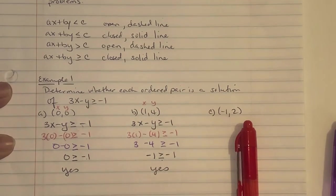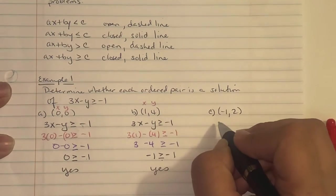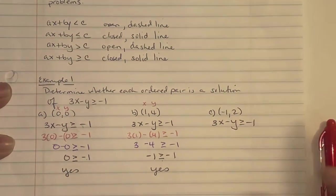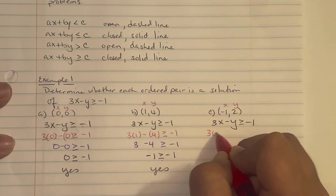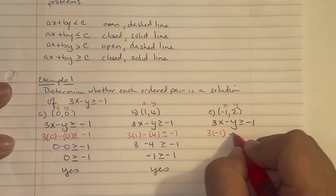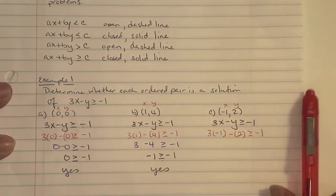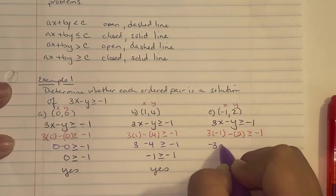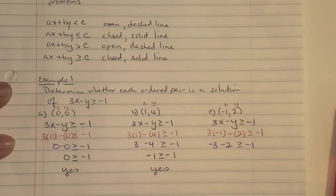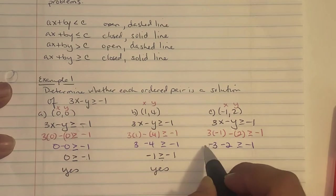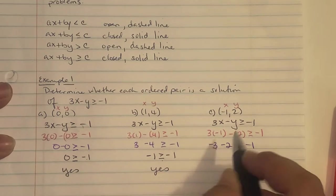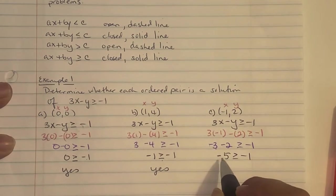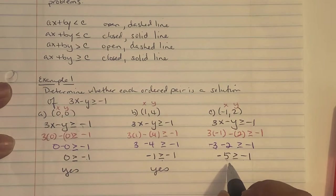For part C, write the equation 3X minus Y greater than or equal to negative 1, and identify X = -1 and Y = 2. Substituting: 3 times (-1) minus (2) greater than or equal to negative 1. 3 times negative 1 is negative 3, minus 2. Remember — same signs, you add them and they get larger. Like being short $3 and short $2 means you're short $5. So negative 5 is greater than or equal to negative 1? Negative 5 is more to the left on the number line, so it's smaller than negative 1. The answer is no.